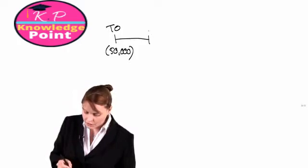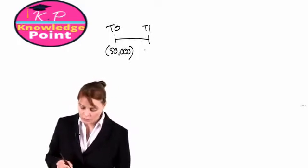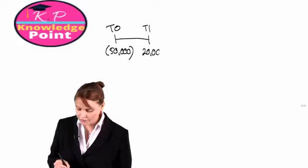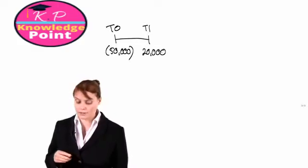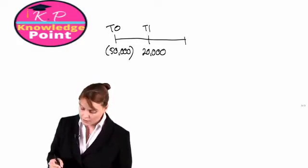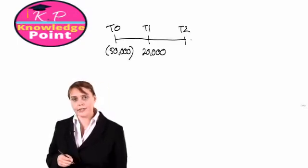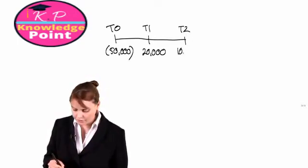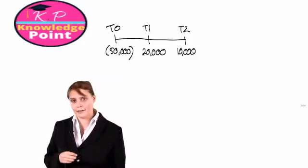At the end of one year, so T1, we're going to have a cash inflow of $20,000. At the end of another year, so T2, we're going to have a cash inflow of $20,000.